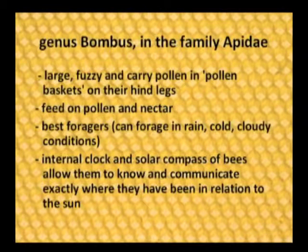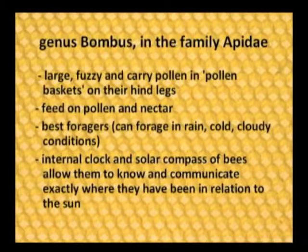Bumblebees are genus Bombus, in the family Apidae. They are large, fuzzy, and carry pollen in their pollen baskets on their hind legs. They feed on pollen for protein and nectar for high calorie intake. They are the best foragers of all the bees — there are about 20,000 different types — but bumblebees can forage in rain, cold, and cloudy conditions. They're best built for that because they're so fuzzy that they can't survive in warm, sunny environments, which is why they are not found in the southern hemisphere.